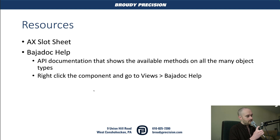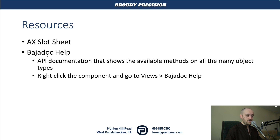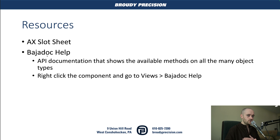Resources — this is really important. This is where you'll find out whether you can do what you want and the correct way to write out your names regarding capitalization. The ax slot sheet on your point is the place to go when pulling up a specific piece of data. And if you want to modify or display data differently, the Baja doc help — the API documentation behind the scenes — tells you available methods on your various object types. You can access it by right-clicking a component, going to Views, then Baja Doc Help.